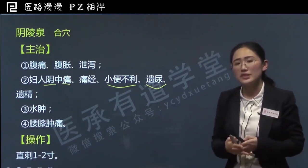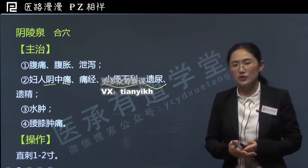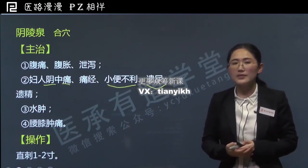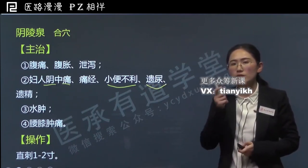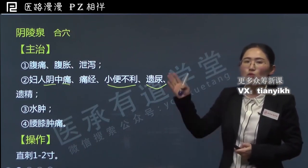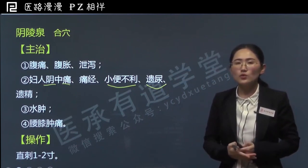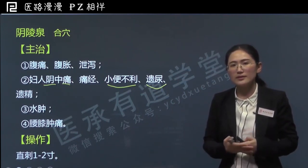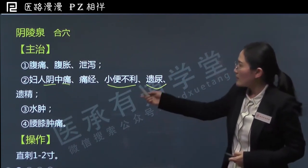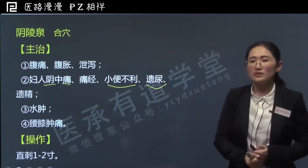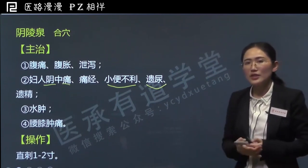这是因为阴陵泉是脾经上的穴位，脾有运化功能，运化水谷精微，是气血生化之源。另外脾还有一个生理特点，就是恶湿，湿邪容易阻碍脾的正常功能。反过来，脾的功能被阻碍减弱了，又会导致体内水湿横行、湿邪更盛。所以它治疗的生殖泌尿系统病症，往往都是因为气血不足或体内湿邪过剩所引起的。